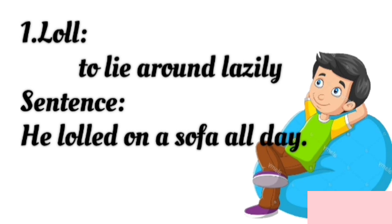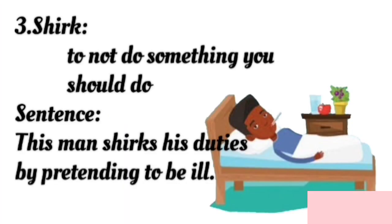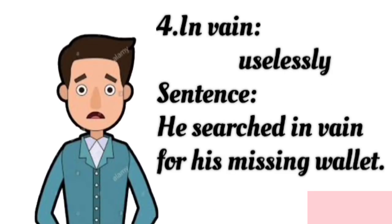Sentence for 'lull': He lulled on a sofa all day. Word: 'log' — meaning trunk of a tree that has been cut. Sentence: Tom sat on a log. Word: 'shirk' — meaning to not do something you should do. Sentence: This man shirks his duties by pretending to be ill.